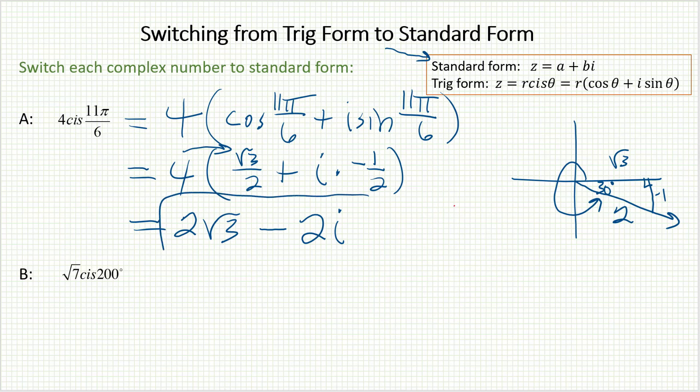Here is the standard form, a plus bi, of that original complex number. Let's look at the second example. I'll tackle it the same way, write it out in its longer version. Cosine 200 degrees plus i sine 200 degrees.